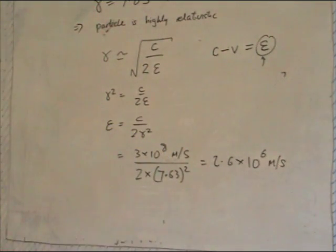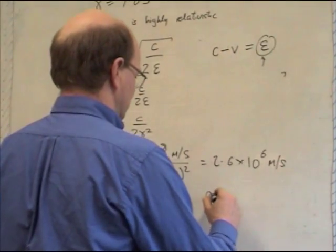So this particle is moving within 1% of the speed of light in terms of its velocity. So it's going very, very fast. And this is accurate. This approximation is accurate to about 5%.